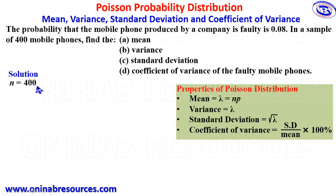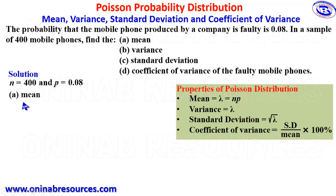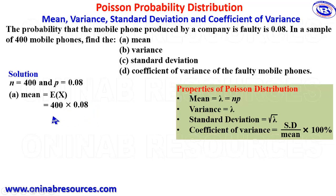From what we are given, n is 400 mobile phones and p, the probability that the phone is faulty, is 0.08. Substituting into our formula, the mean equals E(x) equals np, which gives us 400 multiplied by 0.08, giving us 32. That's the mean.